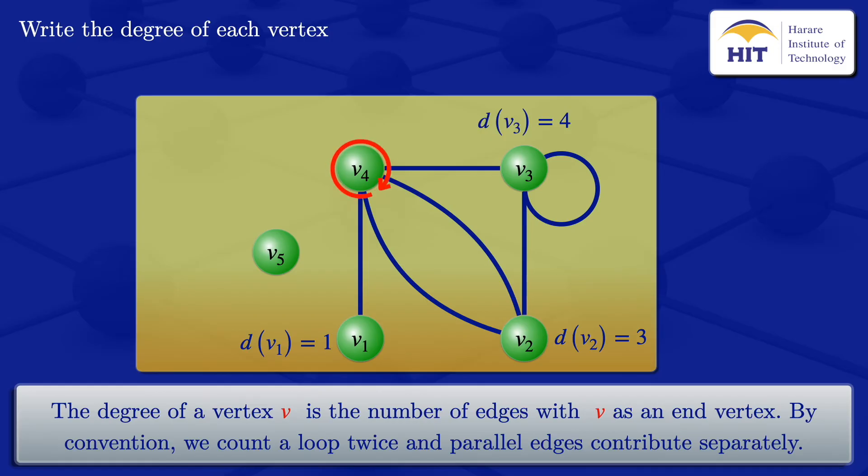Now looking at this vertex here, vertex V4, it is an end vertex for these edges. There are 4 edges there. So the degree of V4 is equal to 4.